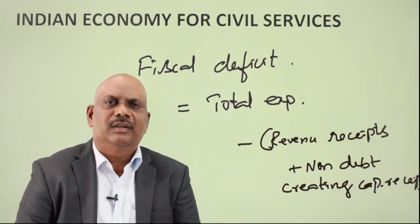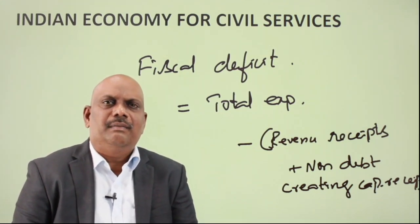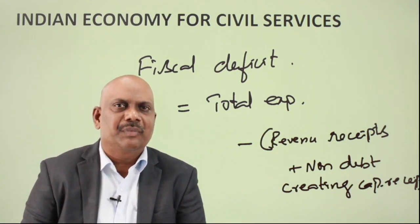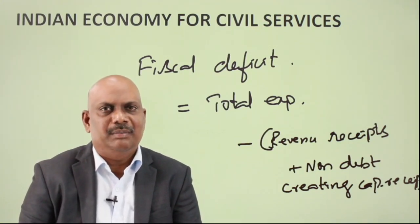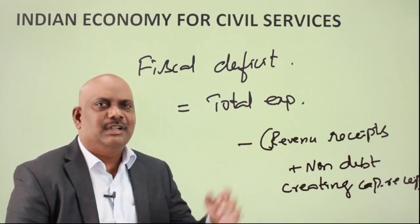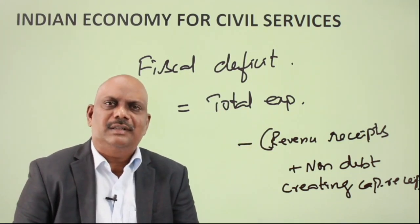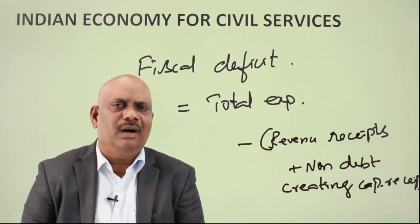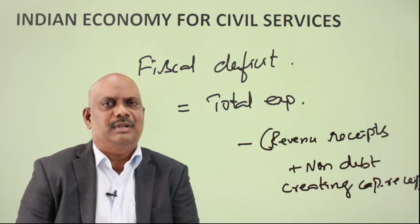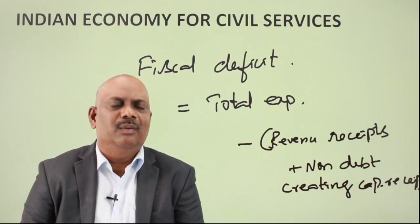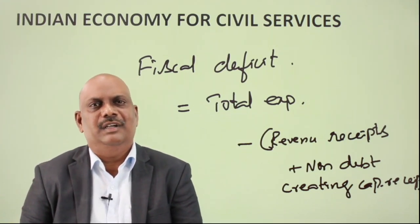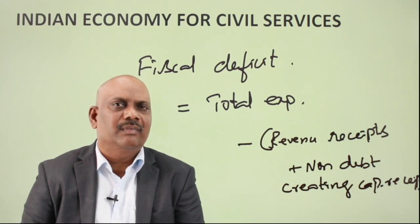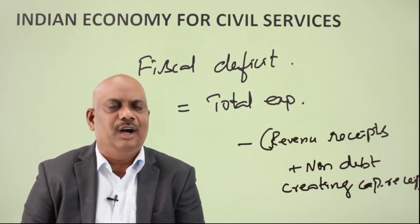So to understand fiscal deficit, one needs to know what is a revenue receipt, what is a capital receipt, what is the debt-creating component and the non-debt-creating component, and within total expenditure, what is revenue expenditure versus capital expenditure. Above all, when did we start using the concept of fiscal deficit? When and why did the Chakravarti Committee criticize the government for using the concept of budget deficit, and how has fiscal deficit varied and fluctuated over time?